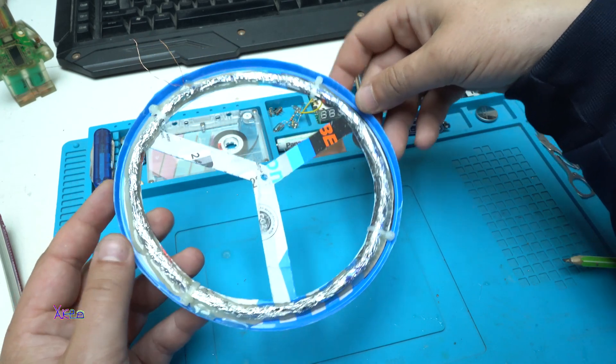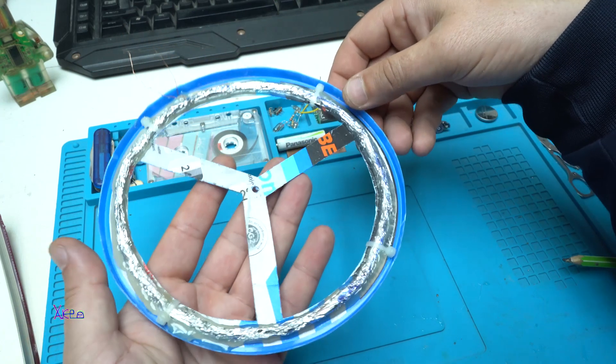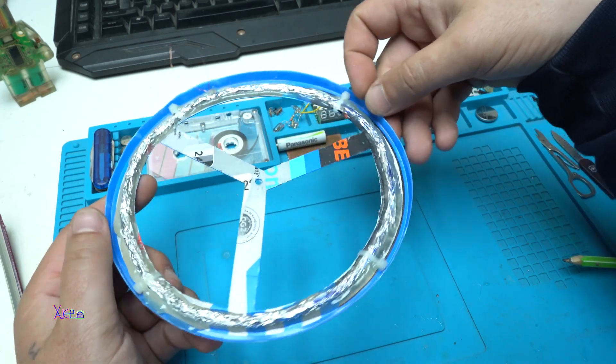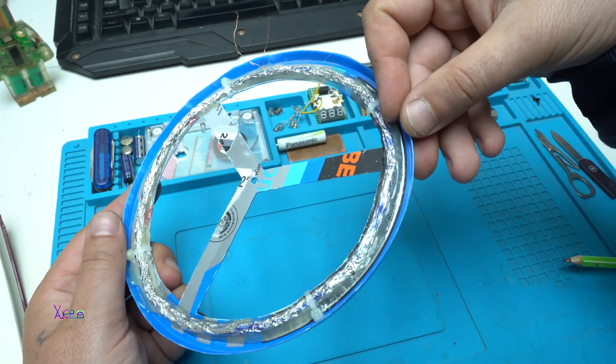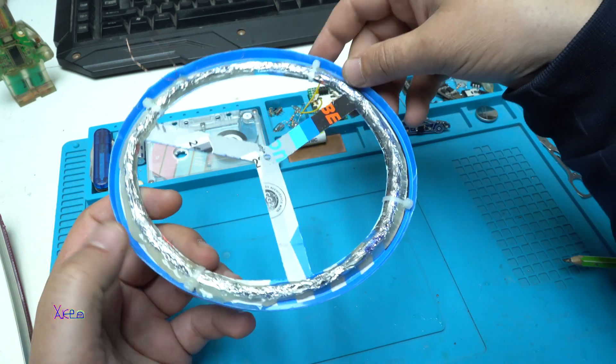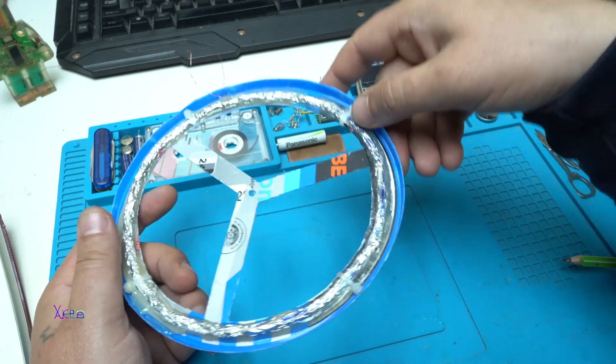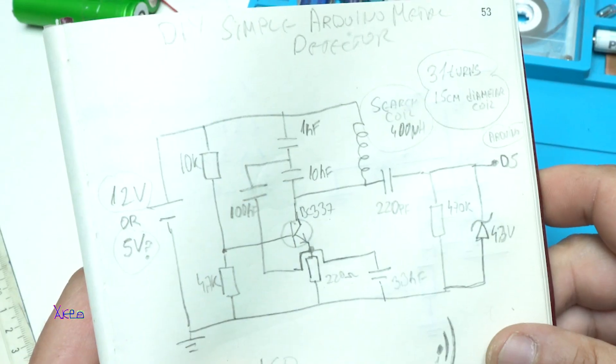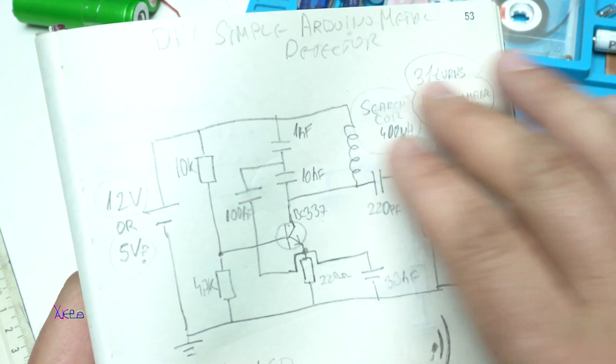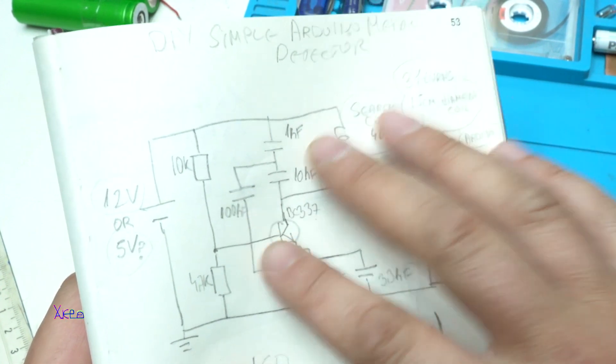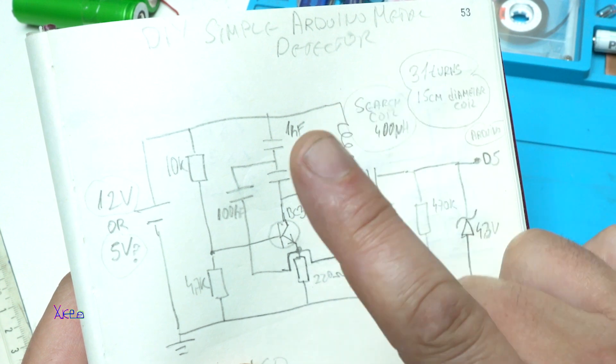The searching coil is finished and now I'm gonna explain the electronic part, making the electronic board with the oscillator. In the previous video I have shared a schematic but here it is again.